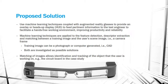The proposed solution is to use machine learning techniques coupled with augmented reality glasses to provide an overlay or HUD to feed pertinent information to the test engineer, facilitating a hands-free working environment and improving productivity and reliability. Machine learning techniques are applied to feature detection, descriptor extraction, and matching between a training image and the user's scene image, that is a camera frame. The training image can be a photograph or computer-generated such as a CAD model — both are investigated. Matching allows identification and tracking of the object, for example the circuit board in the case study.